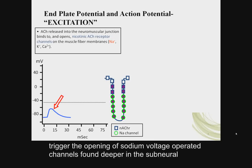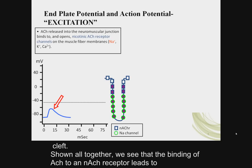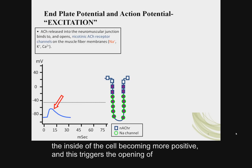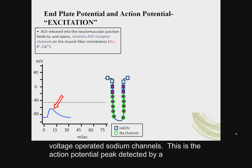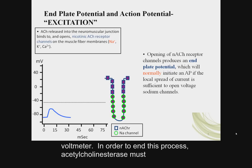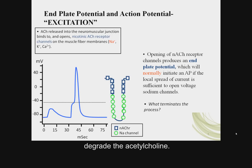The endplate potential will then trigger the opening of sodium voltage-operated channels found deeper in the subneural cleft. The binding of acetylcholine to a nicotinic acetylcholine receptor leads to the inside of the cell becoming more positive, triggering the opening of voltage-operated sodium channels. This is the action potential peak detected by a voltmeter. In order to end this process, acetylcholinesterase must degrade the acetylcholine.